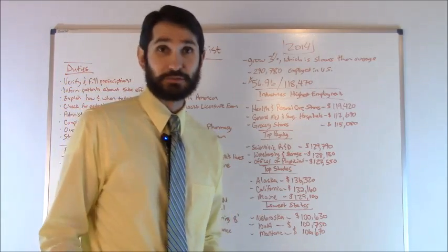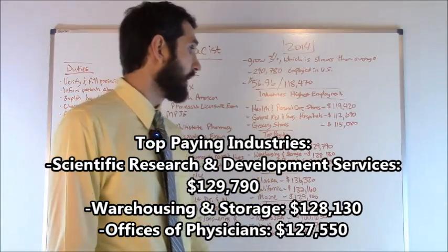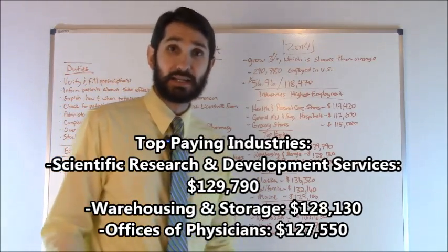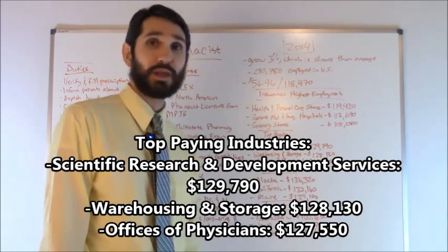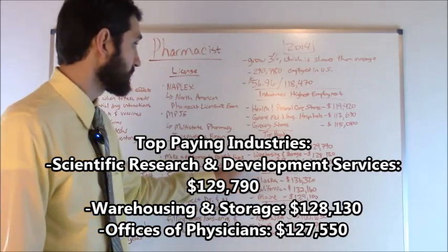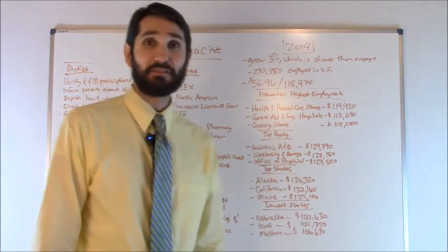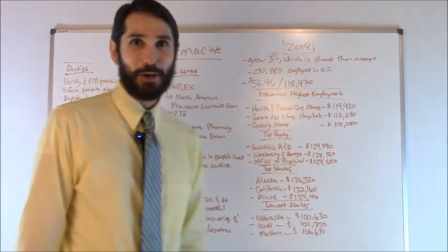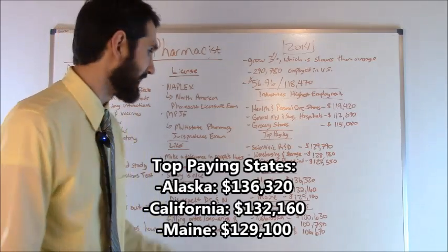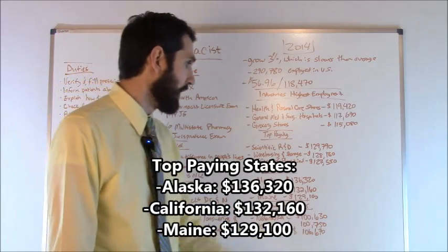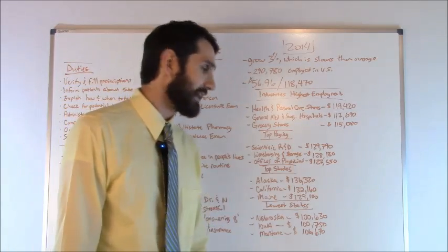What about the top paying industries for pharmacists? Scientific research and development services came in at number one, $129,790 was the average there. Warehousing and storage facilities came in at number two, $128,130 was the average. And then offices of physicians came in at number three, $127,550 was the average there. What about the top paying states for pharmacists? Alaska, number one, $136,320. California, number two, $132,160. And then Maine, number three, $129,100.